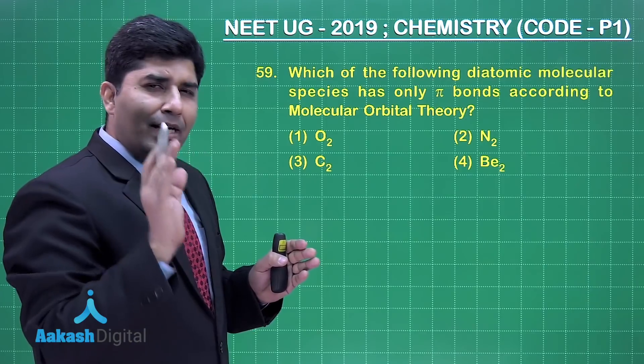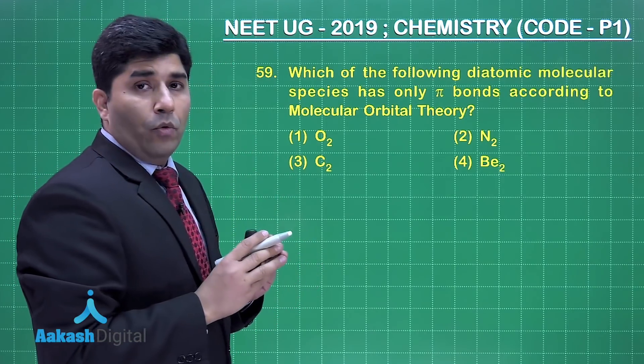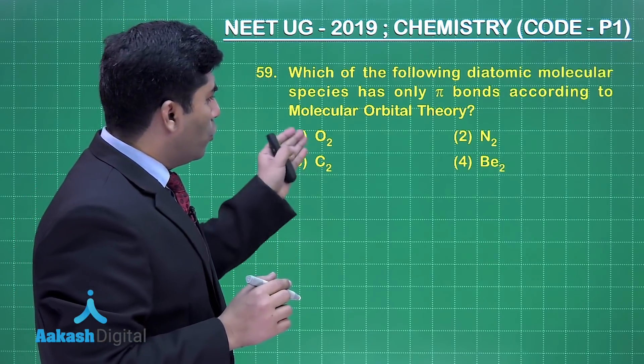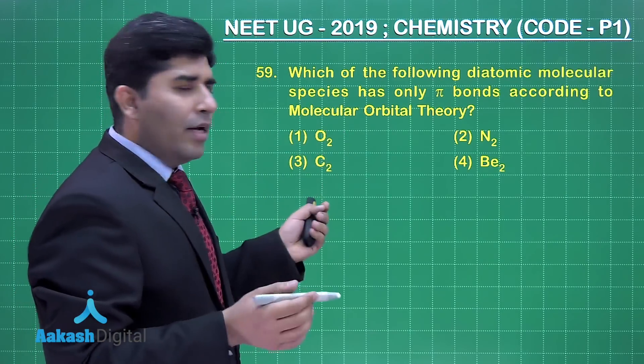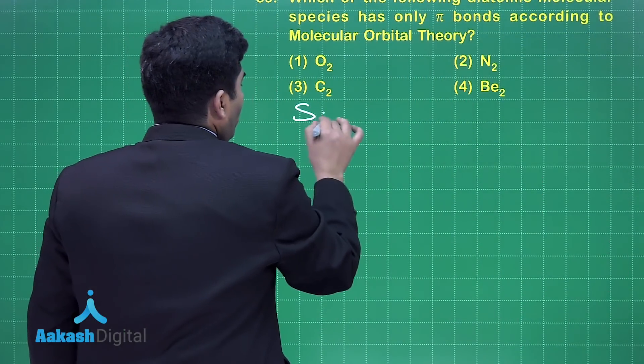In NCERT, it is clearly given that the species is C2. We need to find the reason why C2 and not O2, N2, or Be2. Let's move on to the solution.